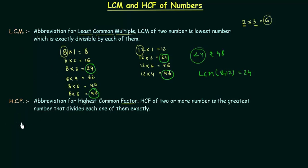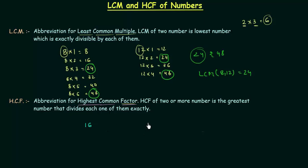Now we will move to HCF, the highest common factor. HCF of two or more numbers is the greatest number that divides each of them exactly. We will understand HCF in the same way — we have three words: factor, common, and highest. Let's take one example: we will find out HCF of 16 and 40.